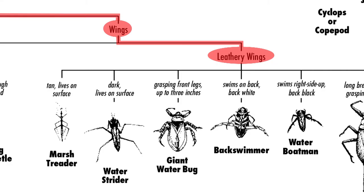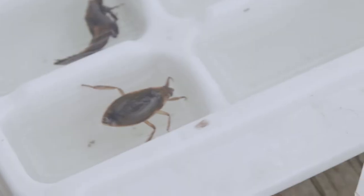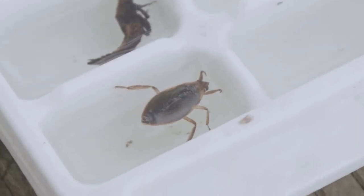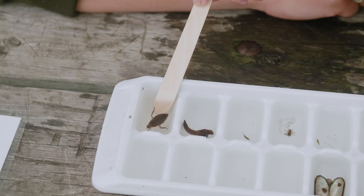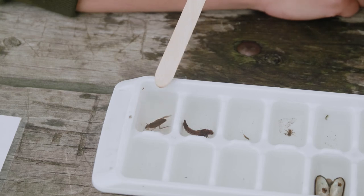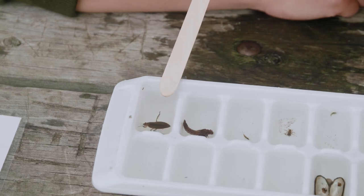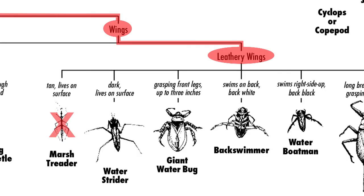Looking at our dichotomous key, there are a lot of options we can choose from, so we have to do a little reading on the characteristics of our macroinvertebrate. The first macroinvertebrate on the list is the marsh treader — it is not a marsh treader. The second one is a water strider, and it says dark, lives on the surface. Our macroinvertebrate is a little bit lighter and lives down below, so it is not a water strider.